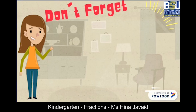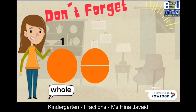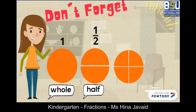So my dear students, don't forget that whole means one complete object. Half is when we divide that whole object into two equal parts. And quarter is when we divide that one whole object into four equal parts.